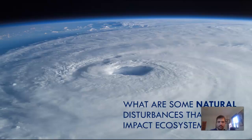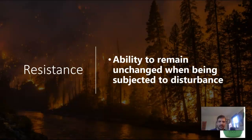What are some natural disturbances that could impact ecosystems? We have storms, volcanoes, earthquakes, flooding, mudslides, tornadoes, heat waves, drought, freezing, fires, and disease — so many things. And there are two different ways that an ecosystem responds to these disturbances.